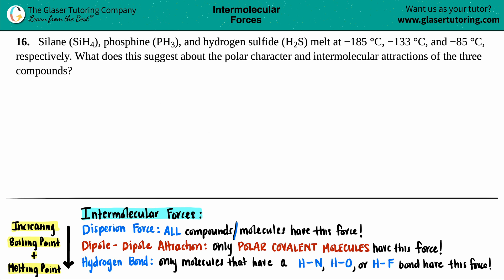Number 16. Silane (SiH4), phosphine (PH3), and hydrogen sulfide (H2S) melt at negative 185 degrees Celsius, negative 133 degrees Celsius, and negative 85 degrees Celsius, respectively. What does this suggest about the polar character and intermolecular attractions of the three compounds?